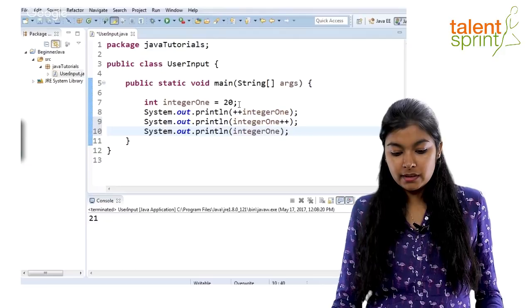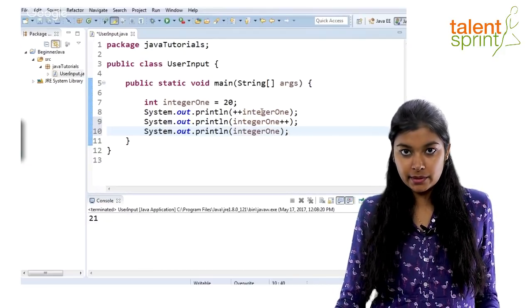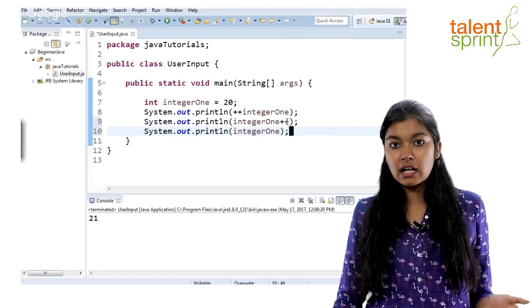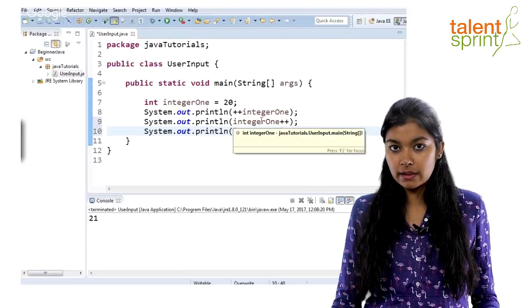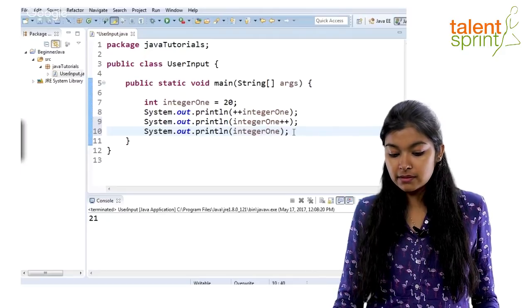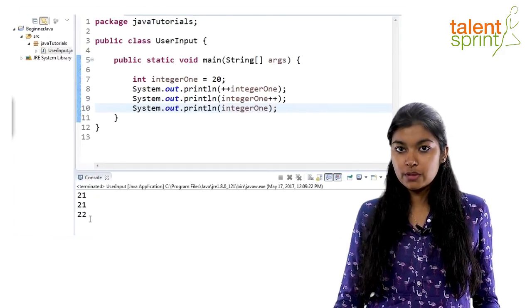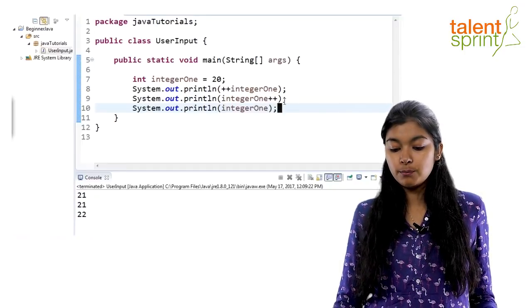Now your output will be 21 because in the first line we are pre-incrementing and then printing. So you will get 21. The next line you are incrementing but after the print, so here also you will get 21 as output. And in the final line where you are printing integerOne, you will see the actual value that is 21, 21, 22. So this is the difference between pre-increment and post-increment.